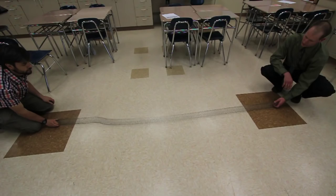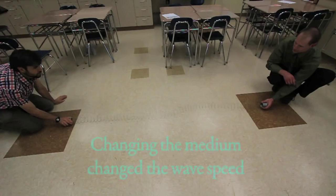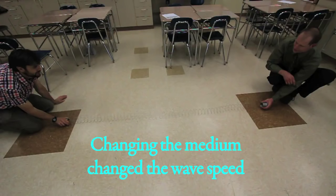So what happens when we change the medium? Here we see a transverse pulse traveling slowly. When the tension in the slinky is increased, the result is an increase in wave speed. When the medium is returned to its original position, the wave speed again slows down.